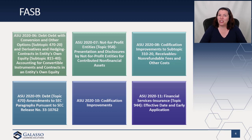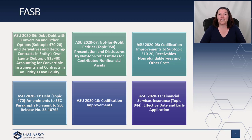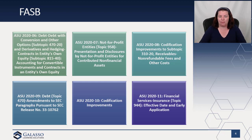The last ASU issued by FASB was ASU 2020-11. Similar to the work under 2020-05, it delays the effective date for insurance long-duration contracts an additional year, but also provides early transition guidance to make it easier for those who do want to early adopt and don't want to take the additional year.